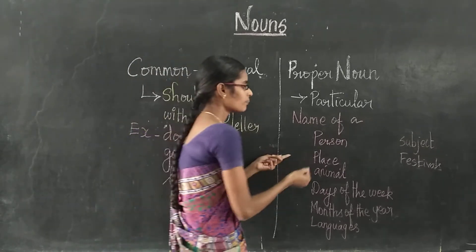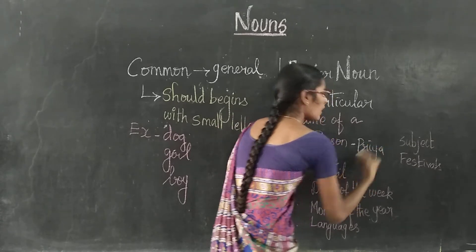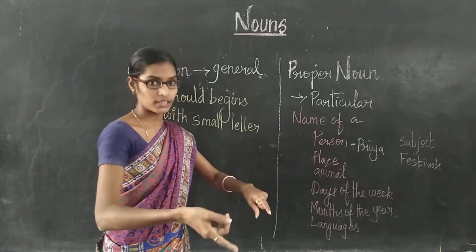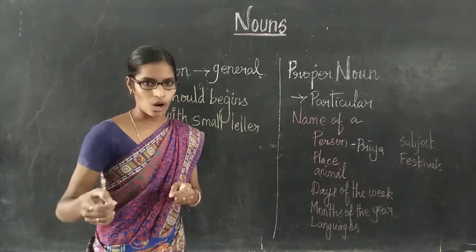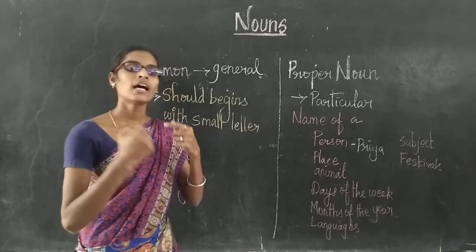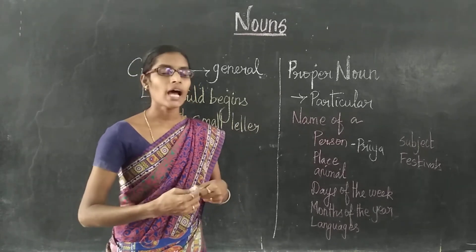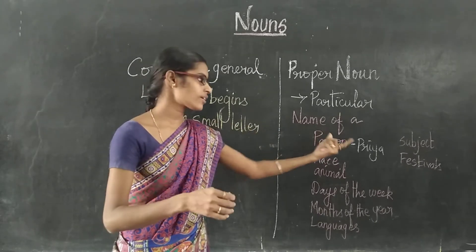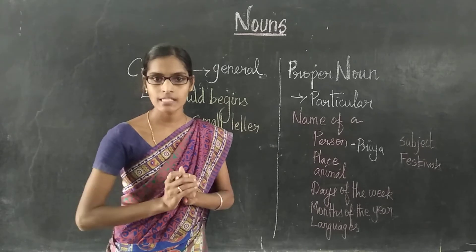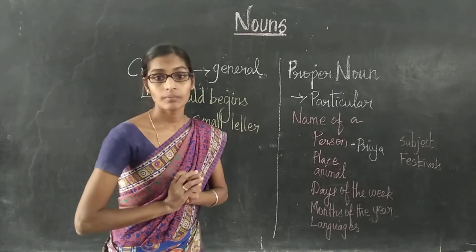For example, person name: Priya. Here you have to notice one thing — Priya is the name of a girl. Girl is the Common Noun, and Priya is the Proper Noun. Why? Because 'girl' refers to all girls, but not all girls are referred to as Priya. Only a particular girl is referred to as Priya. So Priya is a Proper Noun.